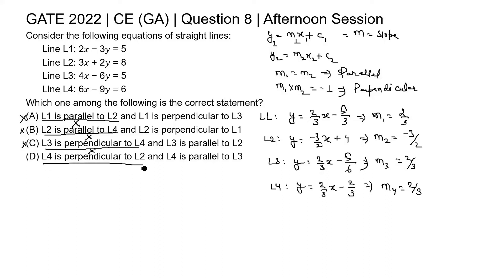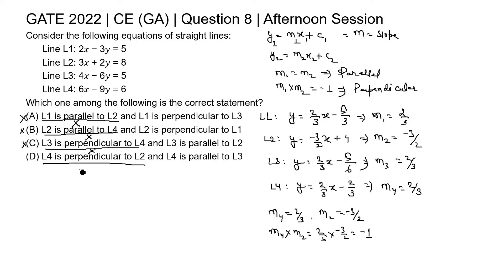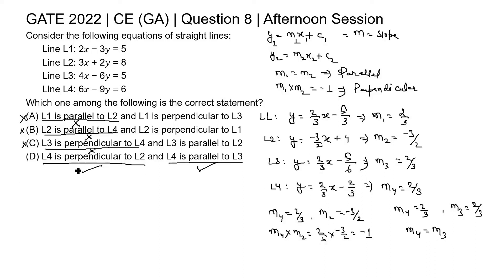Option D: L4 is perpendicular to L2. The slope of L4 is 2/3 and the slope of L2 is −3/2. If we multiply m4 and m2, we get (2/3) × (−3/2) = −1. So L4 and L2 are perpendicular to each other. Additionally, L4 is parallel to L3 since m4 = m3 = 2/3, meaning their slopes are equal. Therefore, the statement in option D is the correct answer.